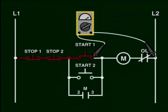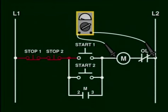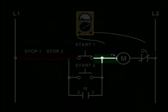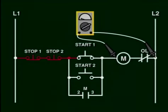Otherwise, we continue our check to the normally open start contacts. We measure from L2 to the beginning of the circuit to make sure that all the wiring in between is correct — this will be the case if there is power. If so, we need to check the other side of the start push button by pressing the start and reading voltage in our voltmeter. If there is no voltage, there is a problem with the start. If we have power from the start push buttons, then we need to check the supply side of the coil with one of the start push buttons pressed. If no voltage is present, we need to check the wiring in between. If there is power, then there is a problem with the starter coil — it may be burned out or open and needs to be replaced.